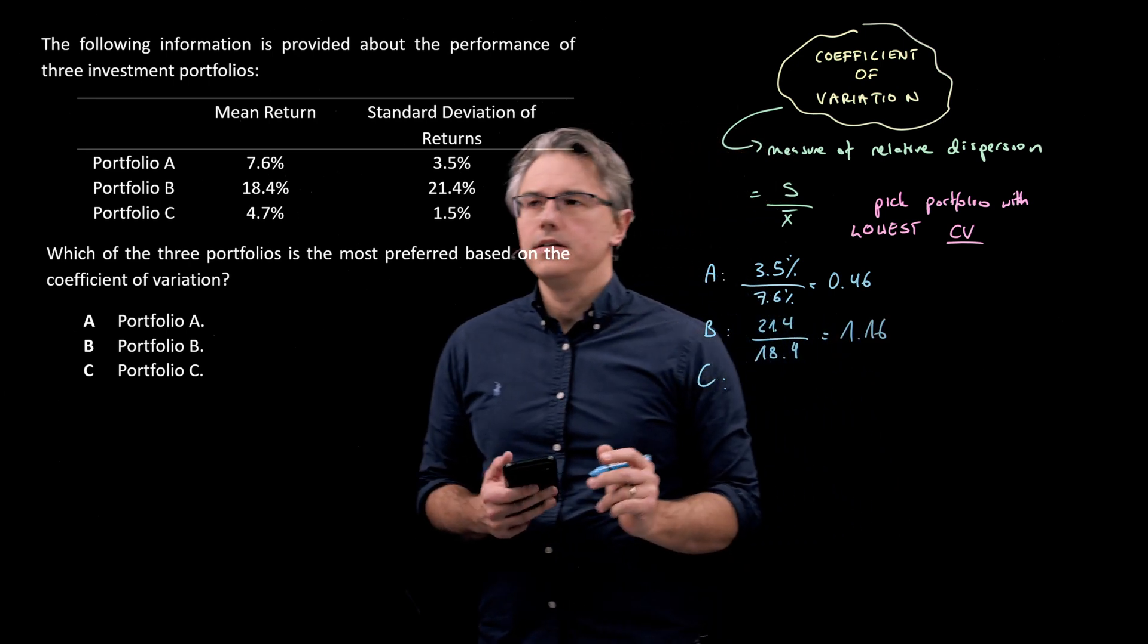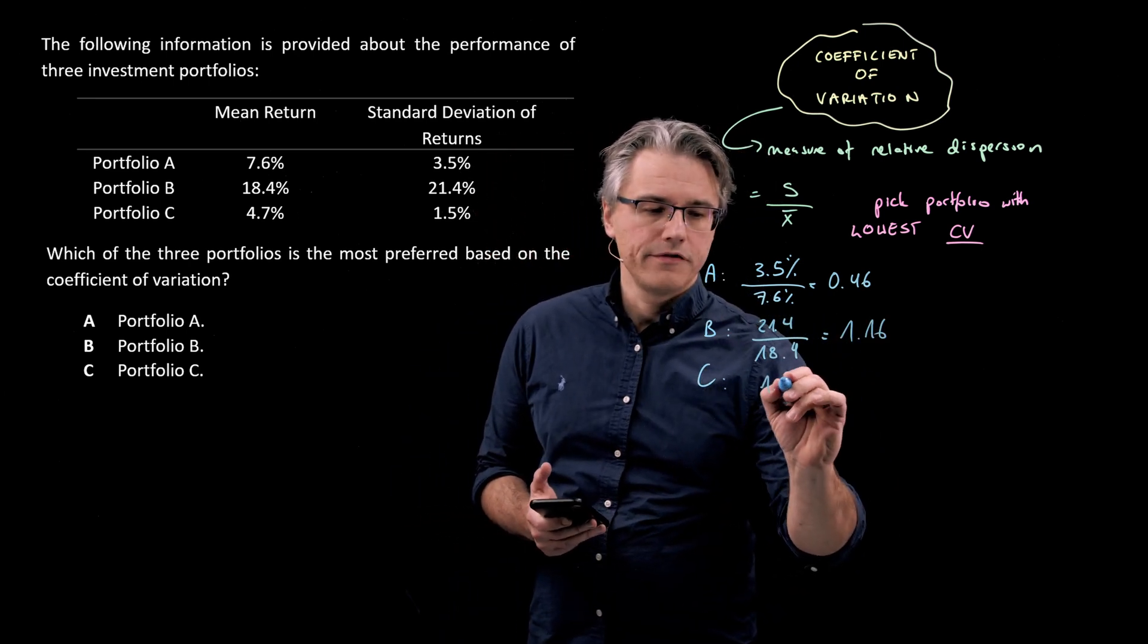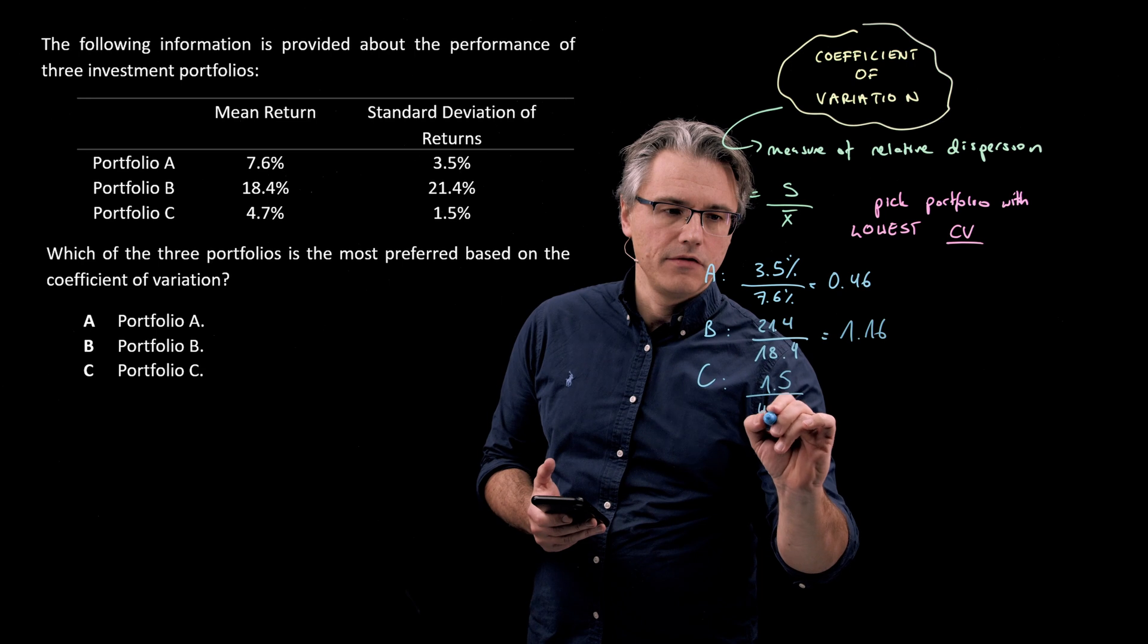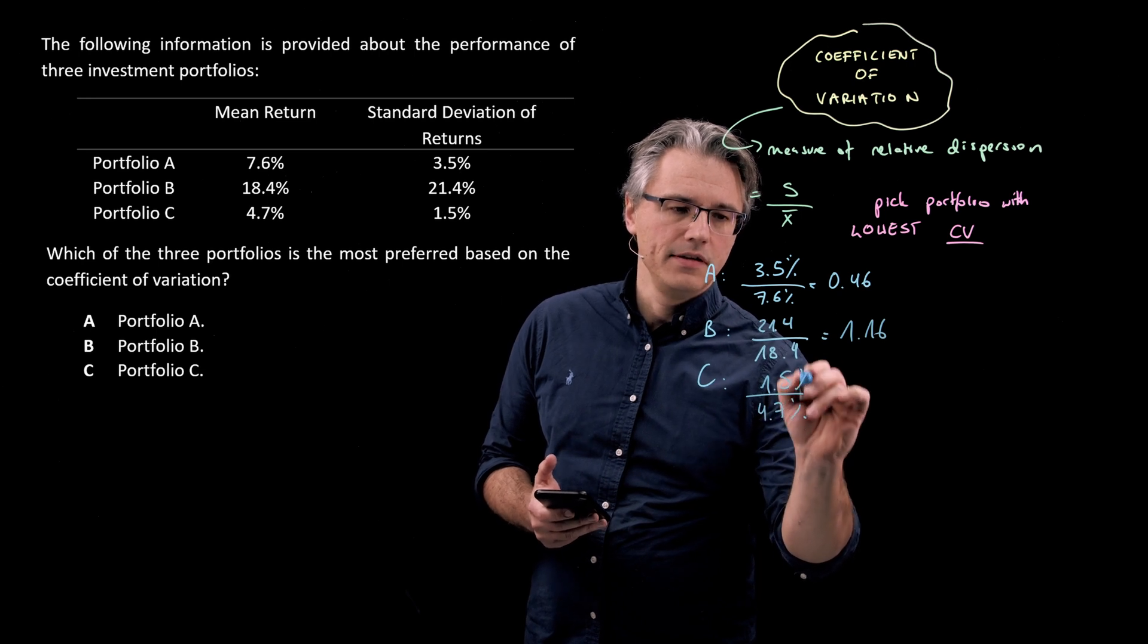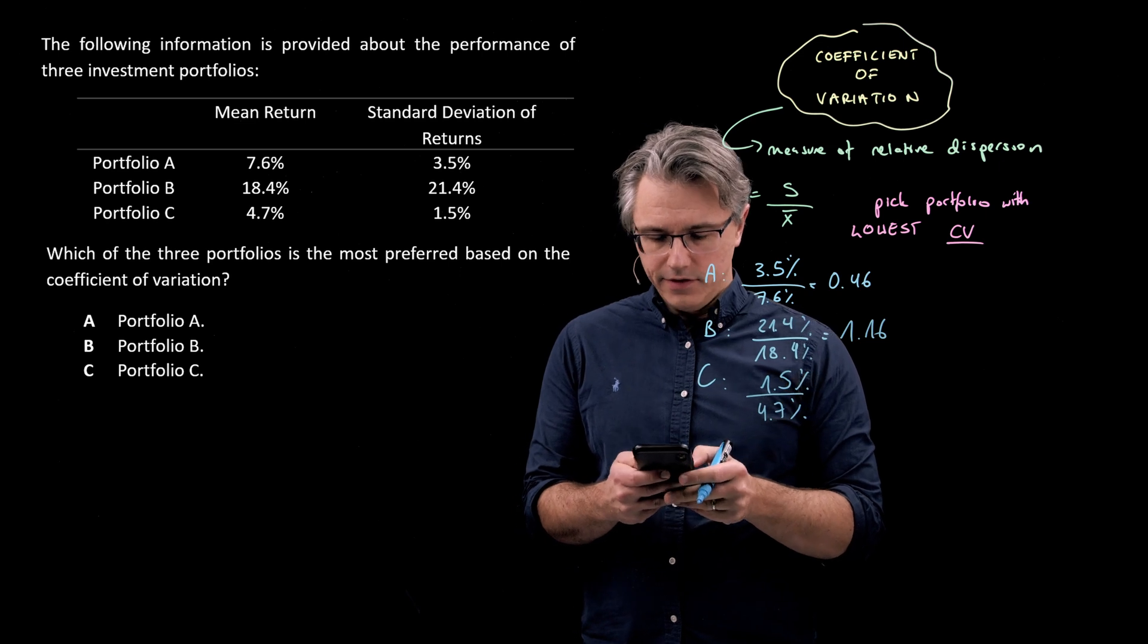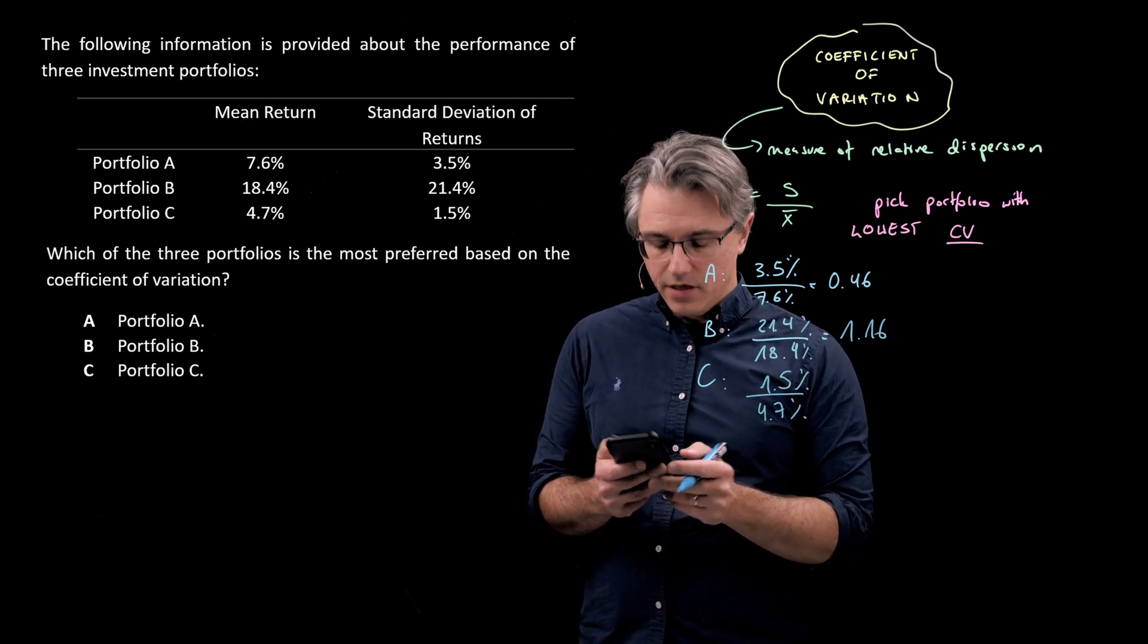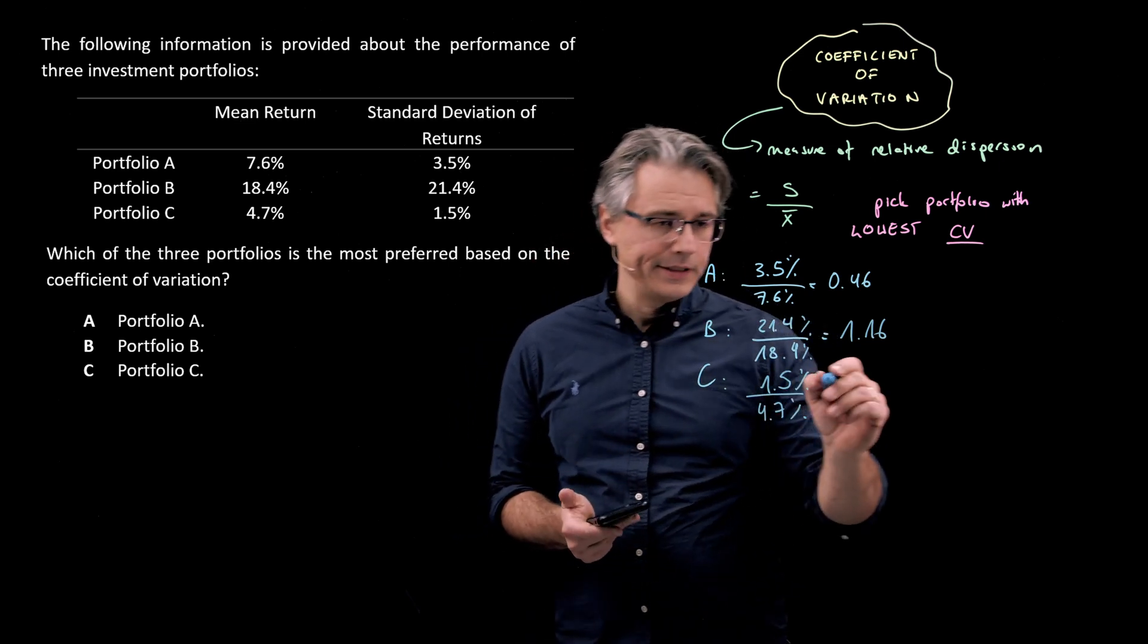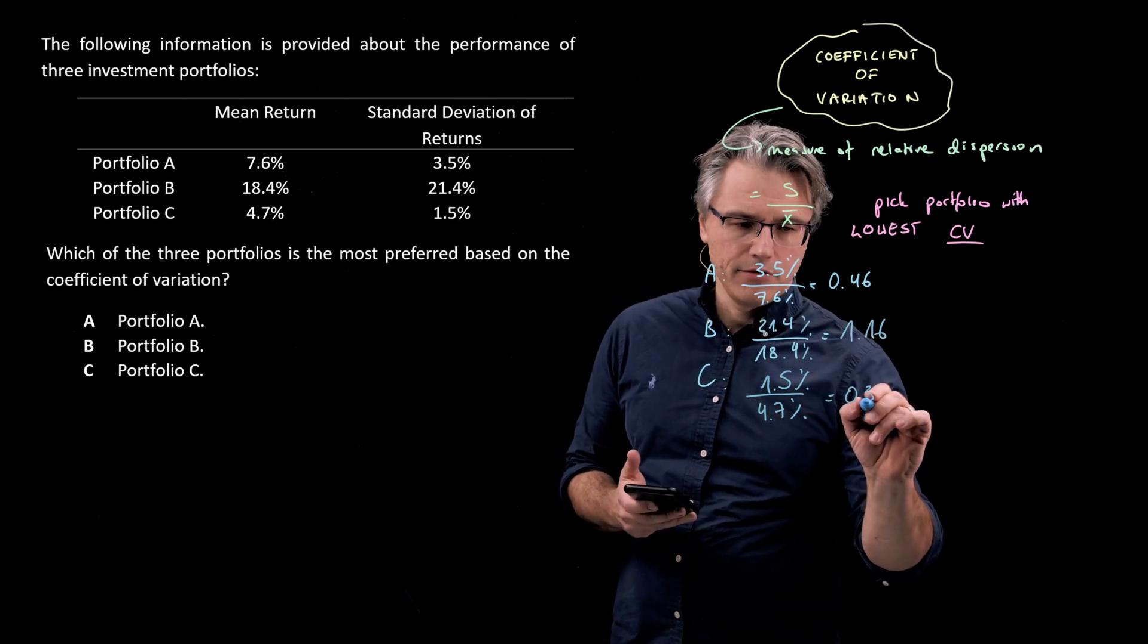And for C, it's going to be 1.5 divided by 4.7. Obviously, let's have the units everywhere. So 1.5 divided by 4.7. Okay, I'm looking at approximately 0.32.